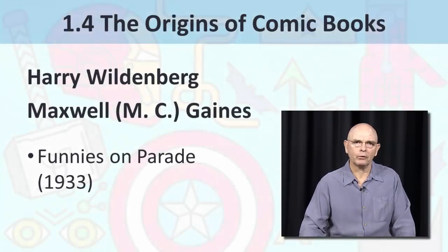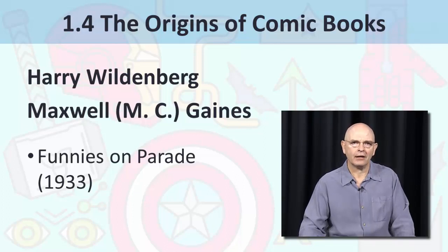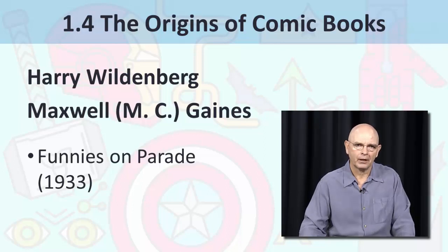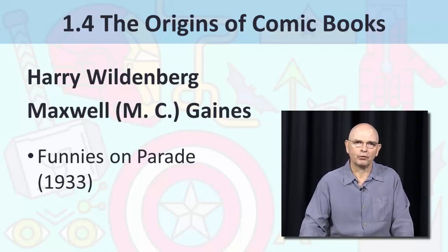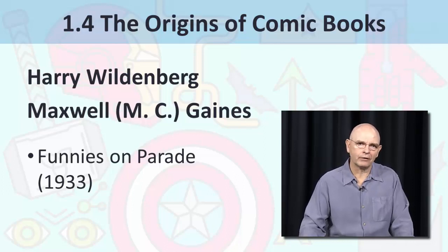In 1933, Harry Wildenberg, an employee of the Eastern Colour Printing Company which printed Sunday comics sections for East Coast newspapers, convinced Gulf Oil to publish a tabloid-sized comic to give away at its gas stations. After some experimentation, Wildenberg developed a reduced format that allowed two pages of comics to fit on a standard tabloid sheet of paper. With the help of another Eastern employee, Maxwell Gaines, Wildenberg persuaded Procter and Gamble to commission Funnies on Parade, a 36-page book of comic strip reprints measuring seven and a half by ten and a half inches with a paper cover, to be given away as an advertising premium.